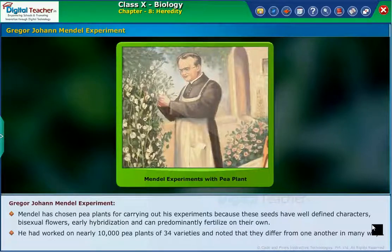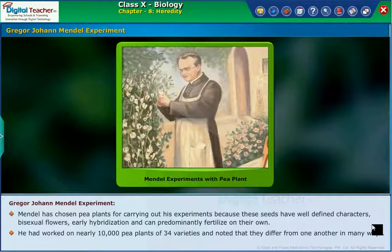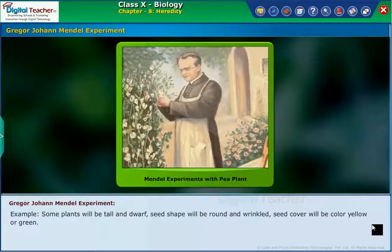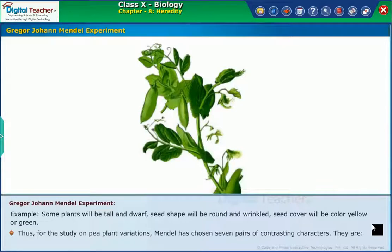He worked on nearly 10,000 pea plants of 34 varieties and noted that they differ from one another in many ways. For example, some plants are tall and some are dwarf, seed shape can be round or wrinkled, and seed color can be yellow or green. For the study of pea plant variations, Mendel chose seven pairs of contrasting characters.